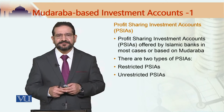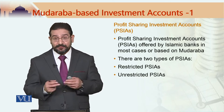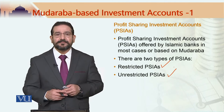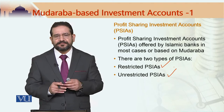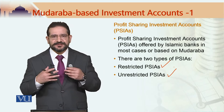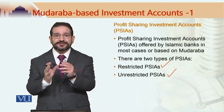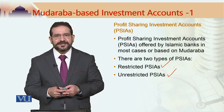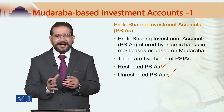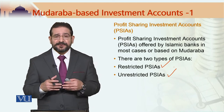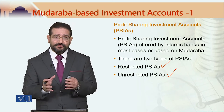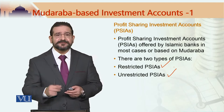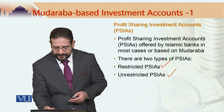There are two types of profit sharing investment accounts used by Islamic banks around the world. One is the restricted profit sharing investment account and the other is the unrestricted profit sharing investment account. In case of restricted profit sharing investment accounts, the bank restricts itself to certain activities in which it invests the money. In case of unrestricted profit sharing investment accounts, the bank does not specify any activity, rather it has the liberty of using the money into any legitimate activity which the bank is allowed to undertake.